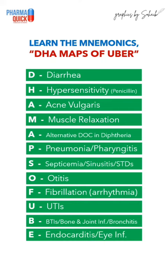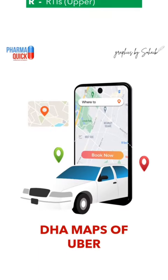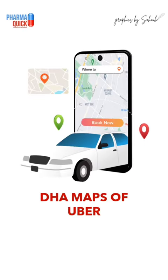E stands for endocarditis and eye infections, while R stands for respiratory tract infections in the upper region. So DHA maps of uber covers all the clinical uses of erythromycin. Don't forget to subscribe to this channel.